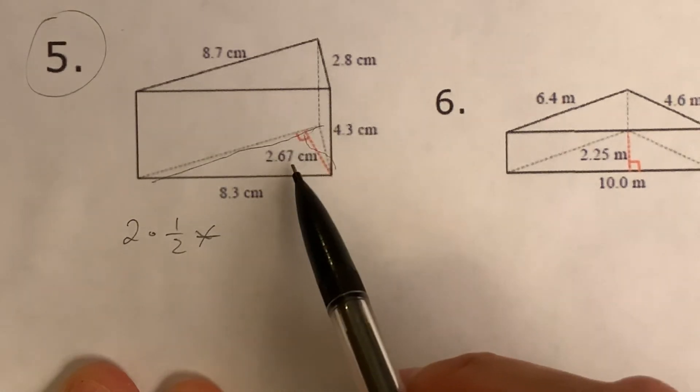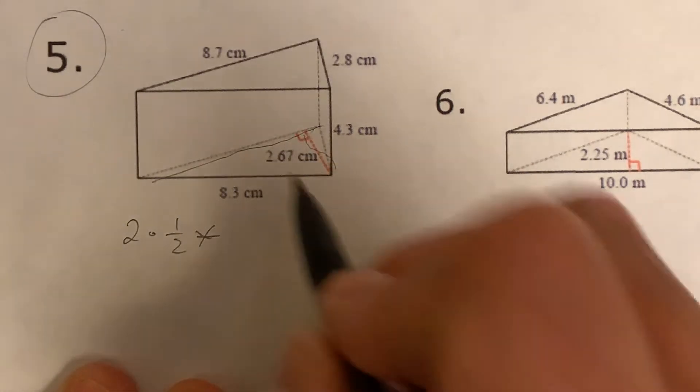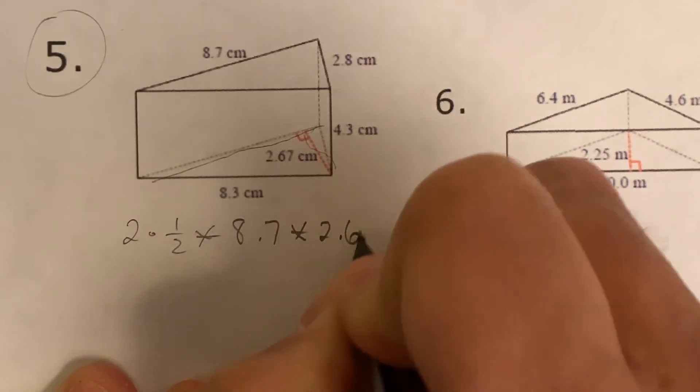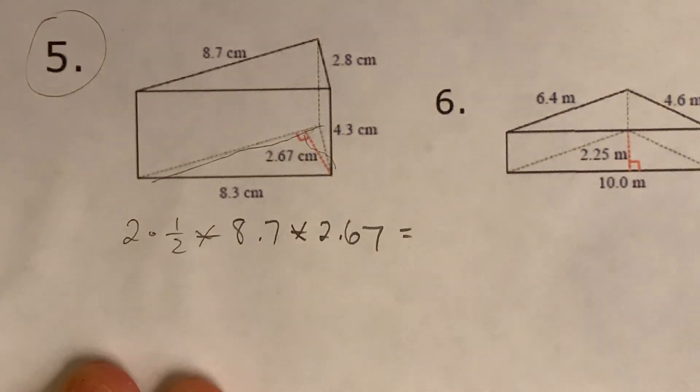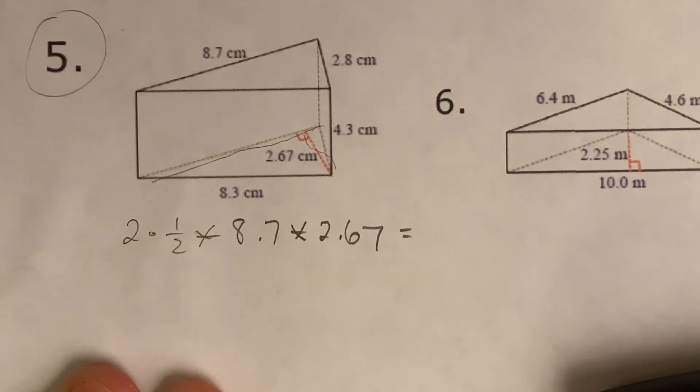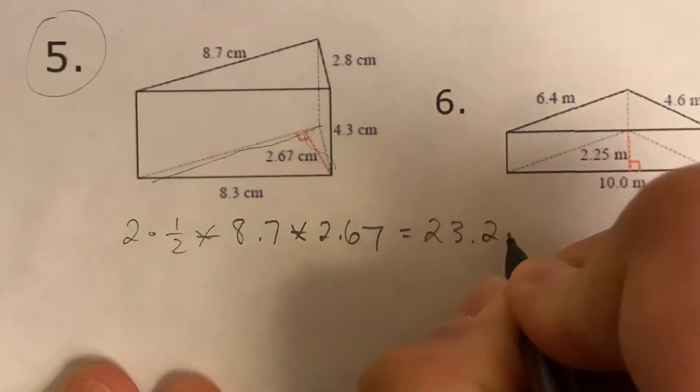Sorry about that crookedness there. So it's going to be 8.7 times 2.67. Let's figure that out first. So remember again we can skip the two times a half part. And I get 23.229.